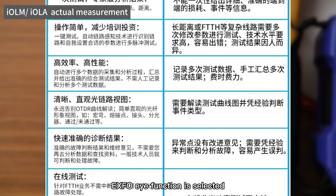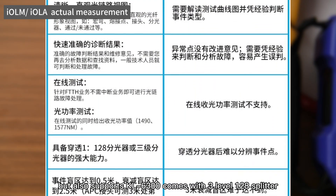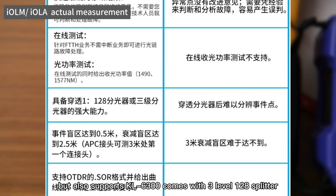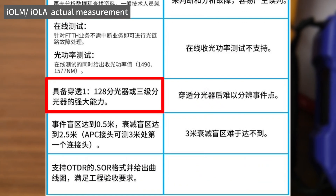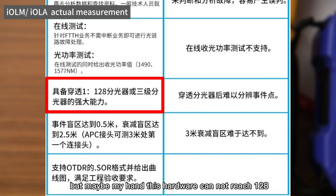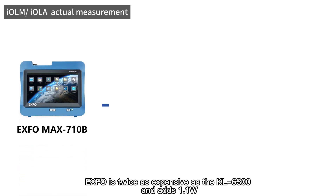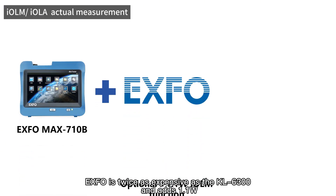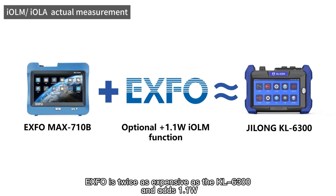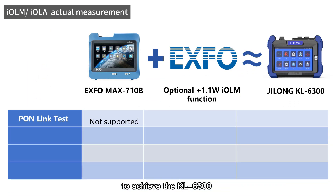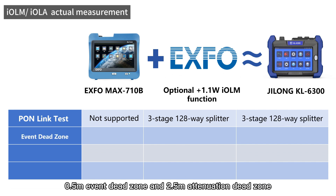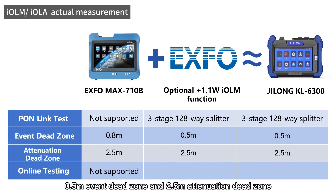The EXFO eye function is a selected option, but it also supports the KL 6300's built-in 3-level 128-way splitter, though my hardware may not be able to reach 128. EXFO is twice as expensive as the KL 6300, and adding 1.1W achieves the KL 6300's 0.5M event deadzone and 2.5M attenuation deadzone.